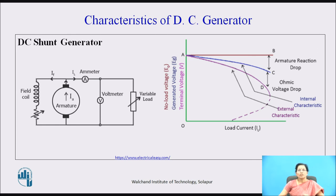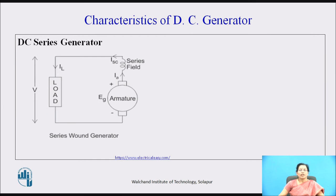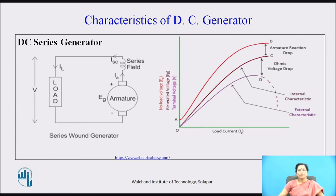For a series generator, the field winding and armature winding are connected in series, with the load connected across them. As we decrease the load resistance, I_L increases. As I_L increases, the field current also increases, and if the field current increases, the induced EMF also increases. In the graph, OA is the induced EMF when load current or field current is zero, due to residual magnetism. AB is the open circuit characteristic, and due to armature reaction drop, the induced EMF decreases.